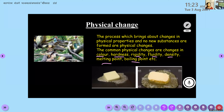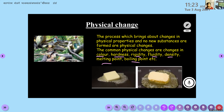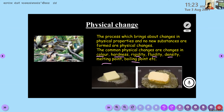What do you mean by rigidity? Toughness or strength, right. Fluidity means ability to flow. Melting point means the temperature at which a substance starts to melt. Boiling point means the temperature at which a liquid starts to boil. These are certain physical properties that change in a physical change.